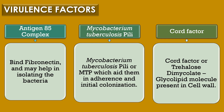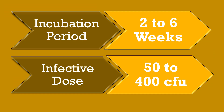The final virulence factor is cord factor or trehalose dimycolate. It is a glycolipid molecule present in the cell wall of Mycobacterium tuberculosis. The incubation period for Mycobacterium tuberculosis is 2 to 6 weeks, and the infective dose required to cause an infection is 50 to 400 colony forming units.